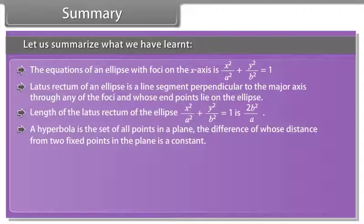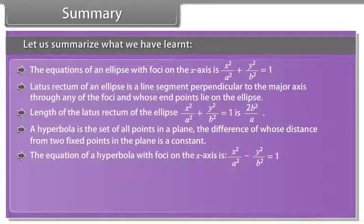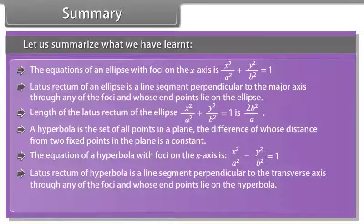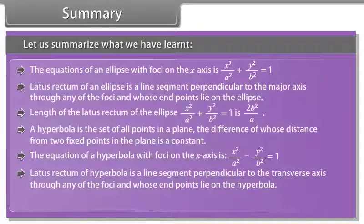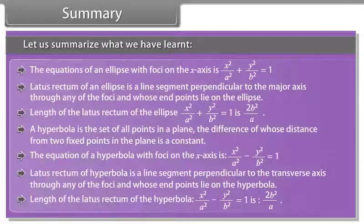A hyperbola is the set of all points in a plane, the difference of whose distances from two fixed points is a constant. The equation of a hyperbola with foci on the x-axis is x²/a² - y²/b² = 1. Latus rectum of a hyperbola is a line segment perpendicular to the transverse axis through any of the foci, whose end points lie on the hyperbola. Length of latus rectum of x²/a² - y²/b² = 1 is 2b²/a.